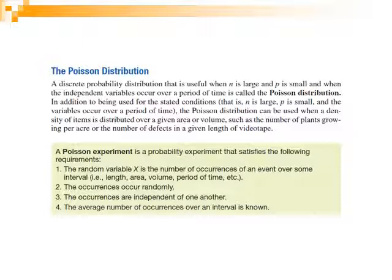In addition to being used under these conditions — n large, p small, variables occurring independently over a specific period of time — the Poisson distribution can also be used when a density of items is distributed over a given area or volume, such as the number of plants grown per acre or the number of defects in a given length of video tape. So the Poisson distribution can be used in these cases.